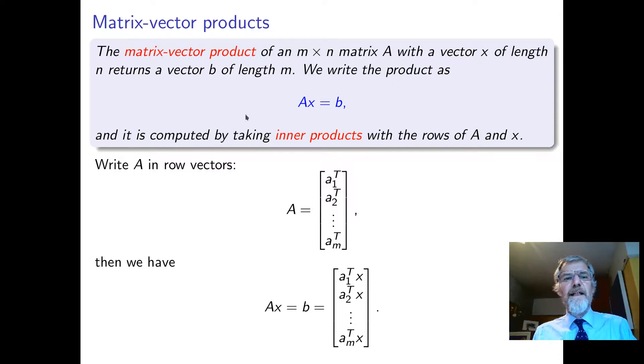Matrix vector products. The matrix vector product of a matrix times a vector. First of all, we have to have the right size. If we have an m by n matrix and then a vector, that's a column vector of length n, then the answer is a column vector of length m. So it takes something of length n and gives us one of length m.